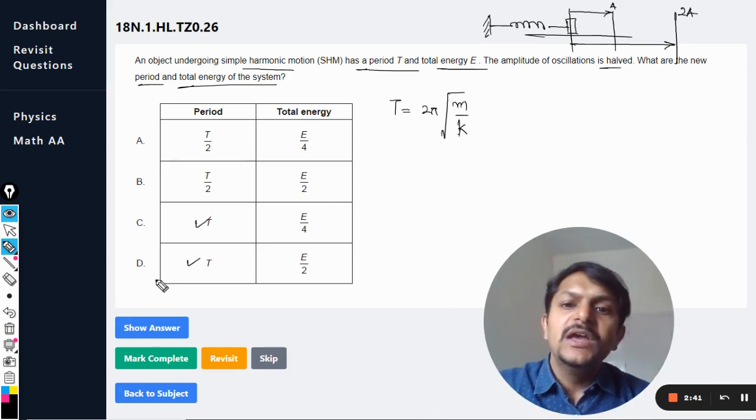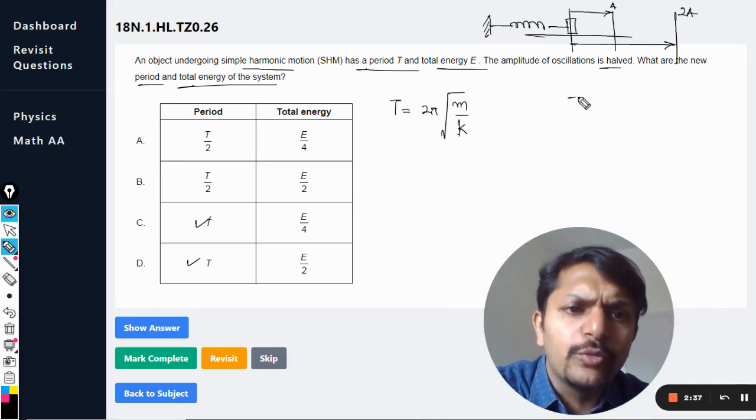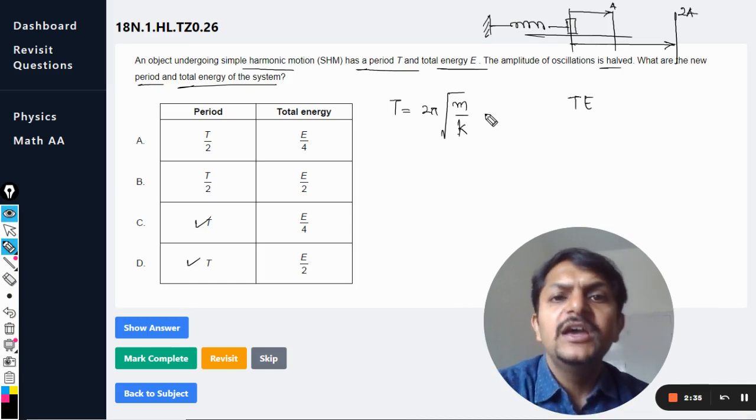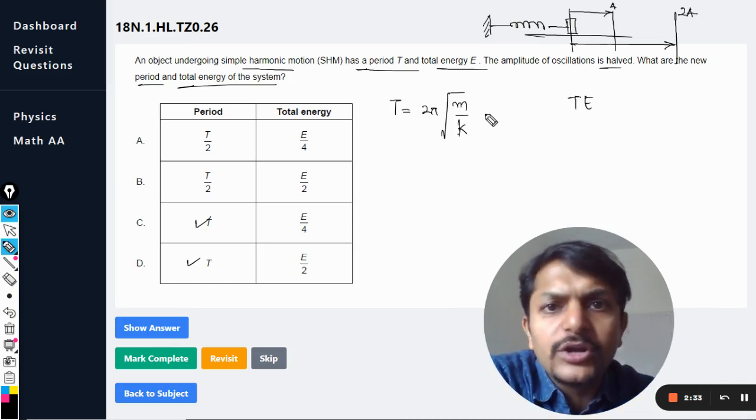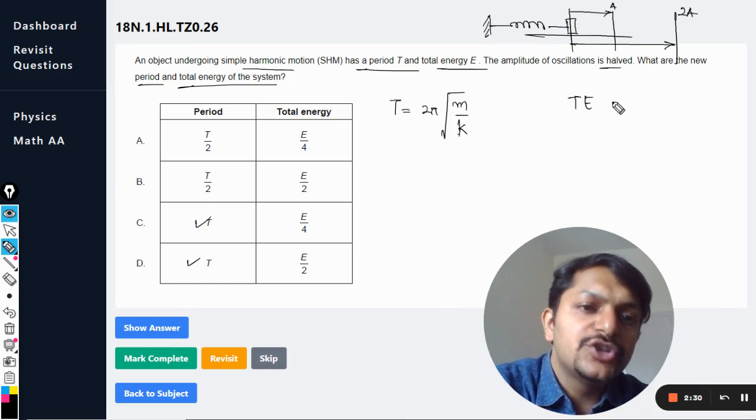So one thing is sure that the time period will be the same, so either C or D. Now we are moving to the total energy. There is no formula for the total energy. Total energy is sum total of kinetic and potential at any time.